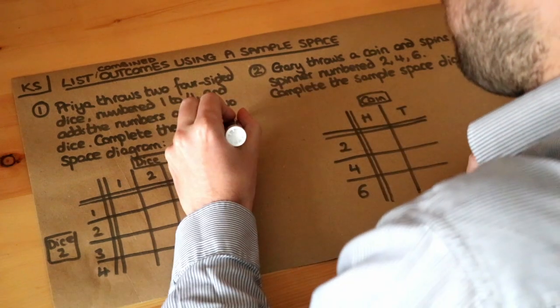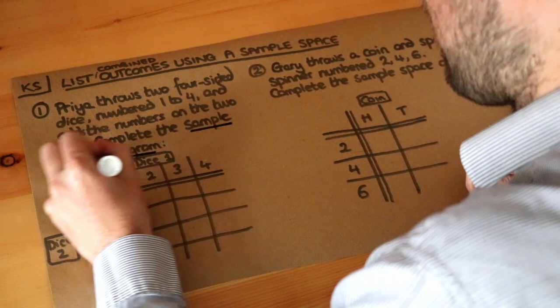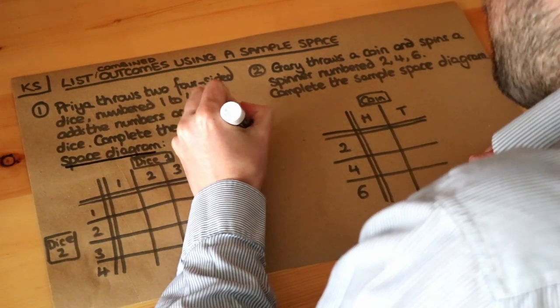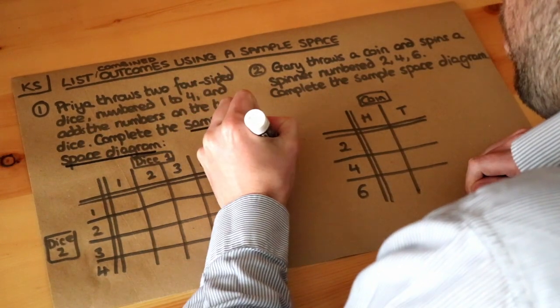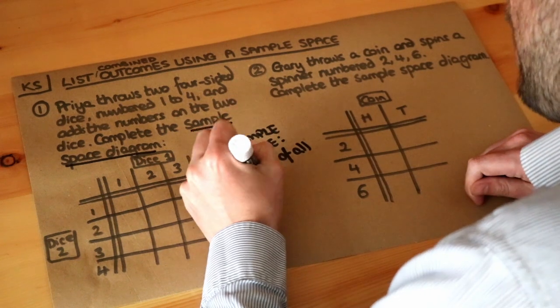Now what do we mean by this term sample space diagram? Well, simply put, a sample space is just a list of all possible outcomes.